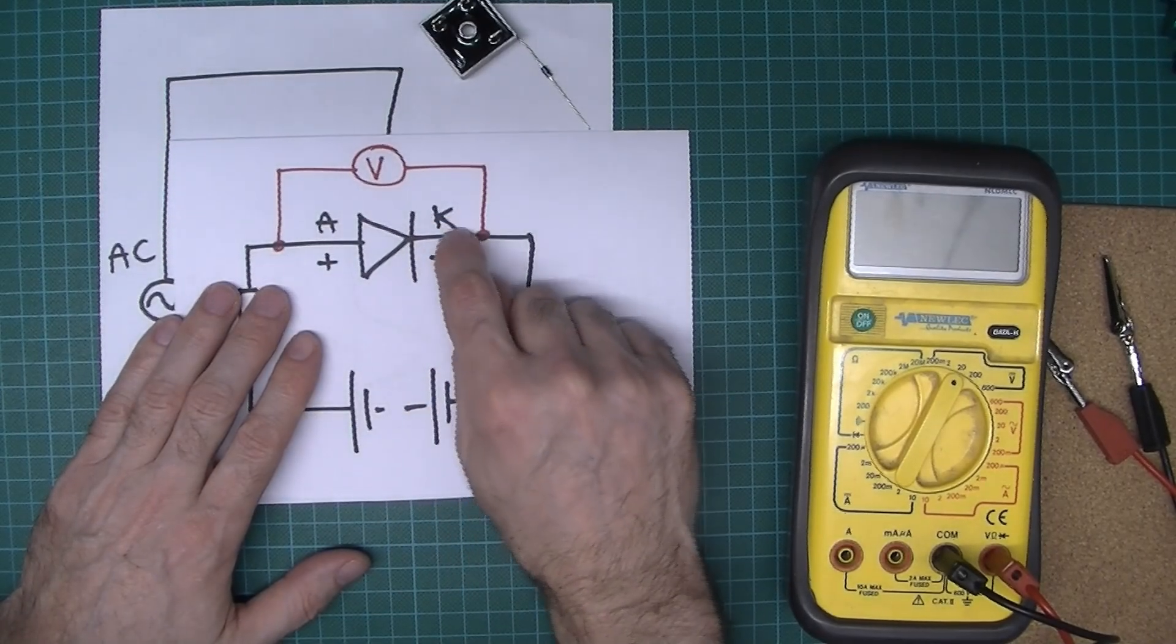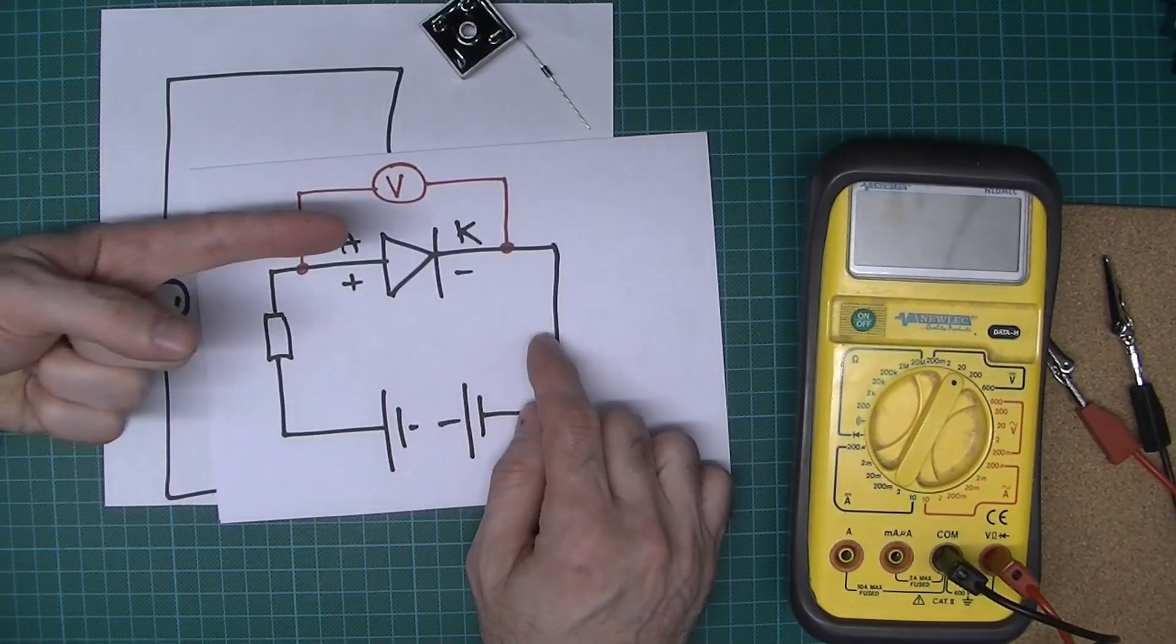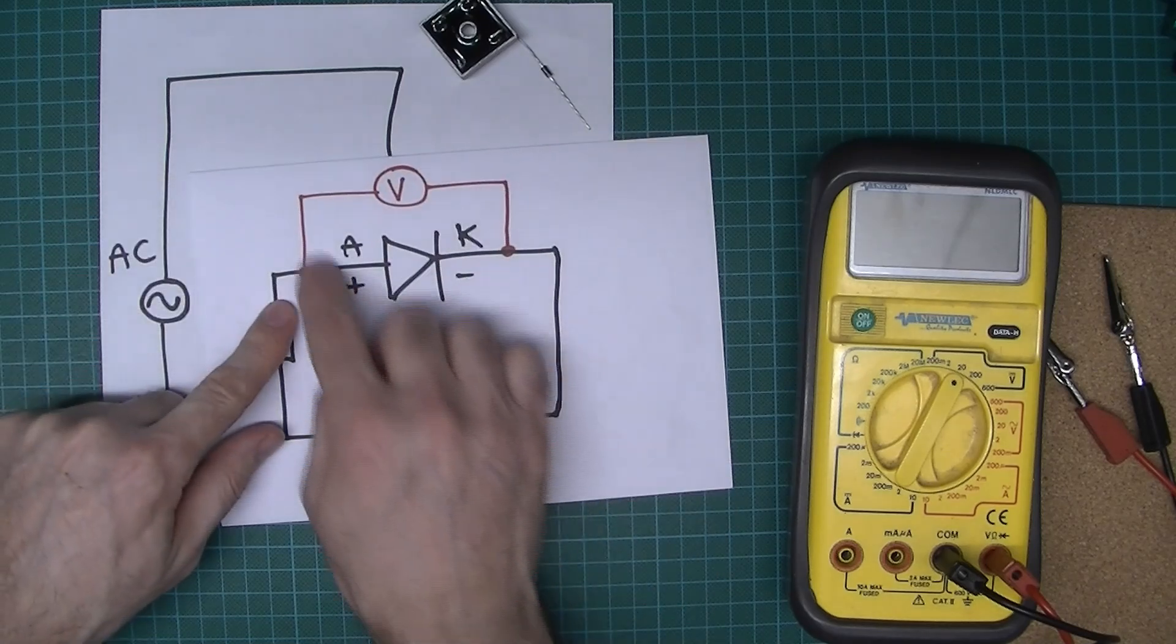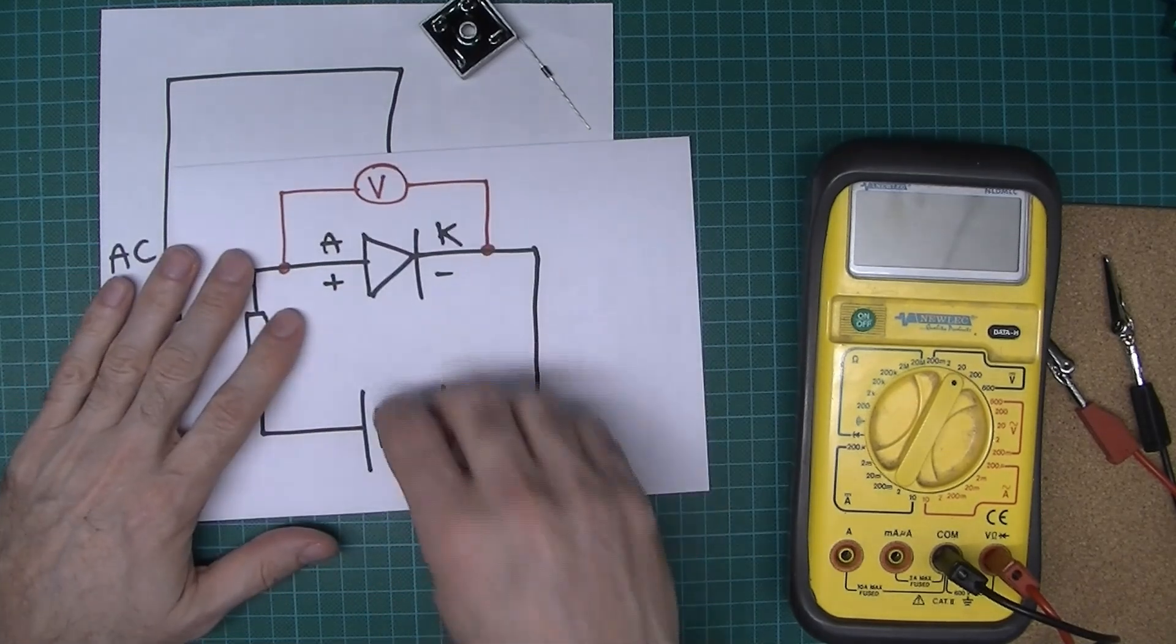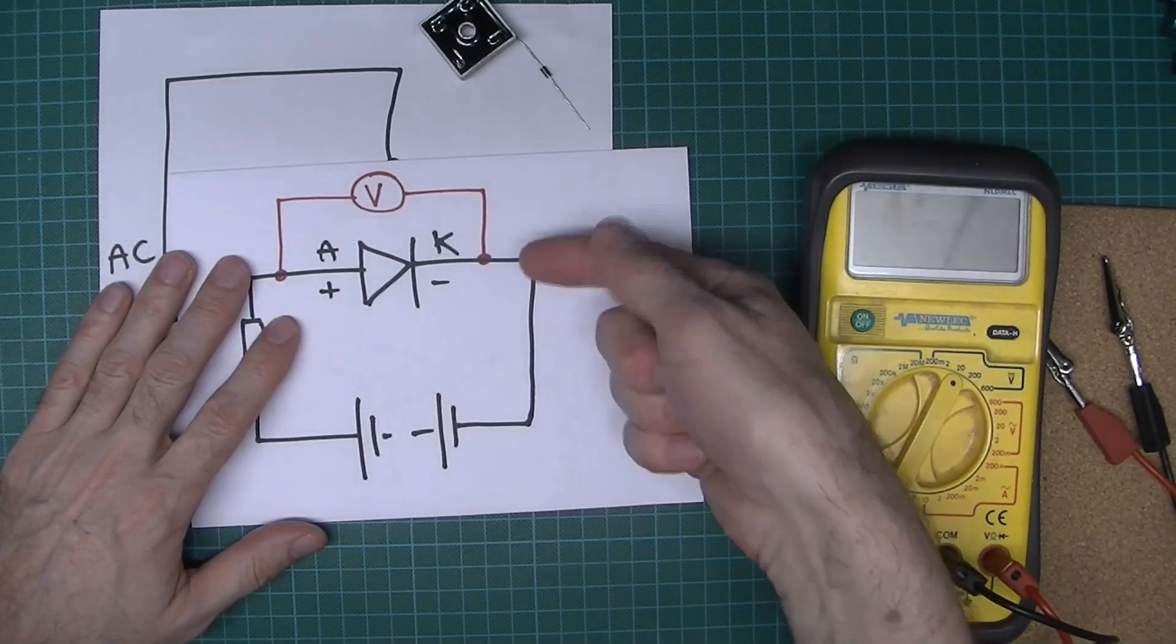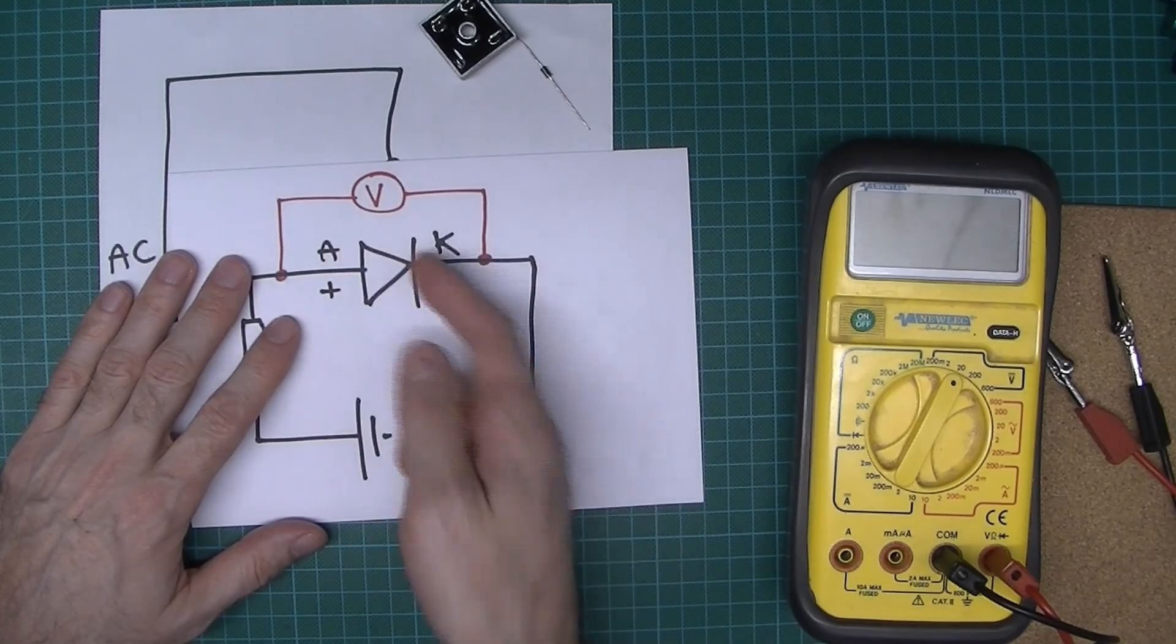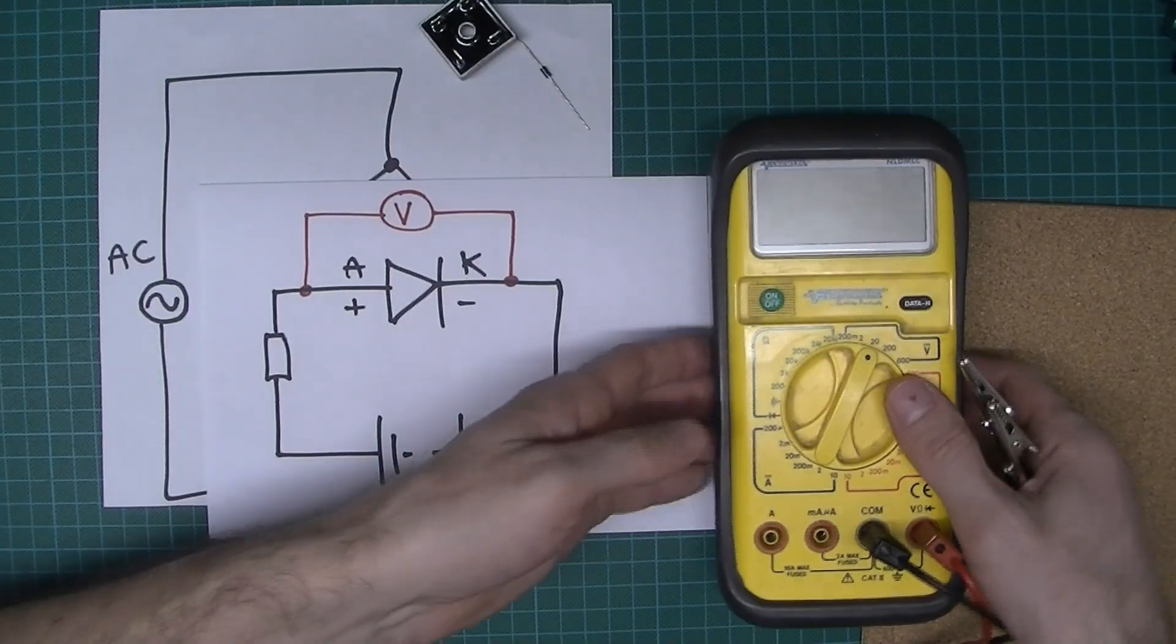When we've got the diode forward biased, the current can flow so we'll have a voltage drop. But if we turn the polarity of the battery around and try to have current flow, because it's reverse biased it would act as an open switch or an open circuit. There's a function built into many meters, a diode test, so that's the one that we're actually going to use.